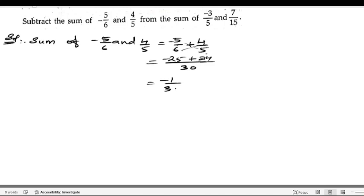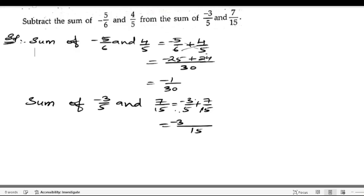Sum of -3/5 and 7/15. The LCM is 15. In the 5 times table, 5×3 are 15, we get 3 times, so that 3 should be multiplied with the numerator: 3×3 are 9. Plus, 1×7 are 7. If we subtract 7 from 9, we get -2/15.